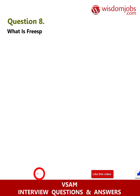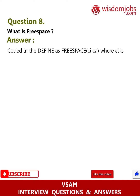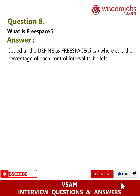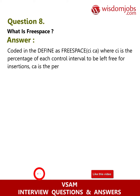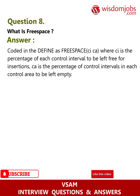Question 8: What is free space? Answer: Coded in the DEFINE as FREESPACE (CI CA), where CI is the percentage of each Control Interval to be left free for insertions, and CA is the percentage of Control Intervals in each Control Area to be left empty.